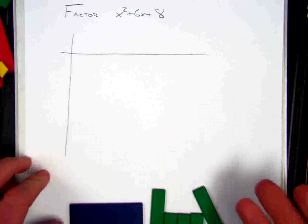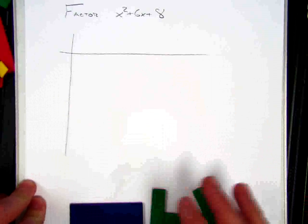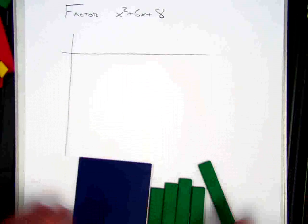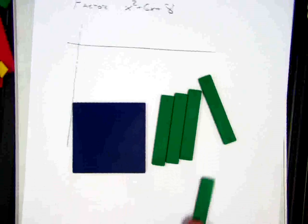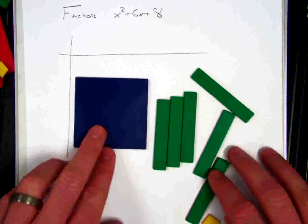If you remember multiplying by algebra tiles, you know that this product in here will always make a perfect rectangle. So what I want to do is start by modeling my product with algebra tiles and seeing if I can arrange it into a rectangle.